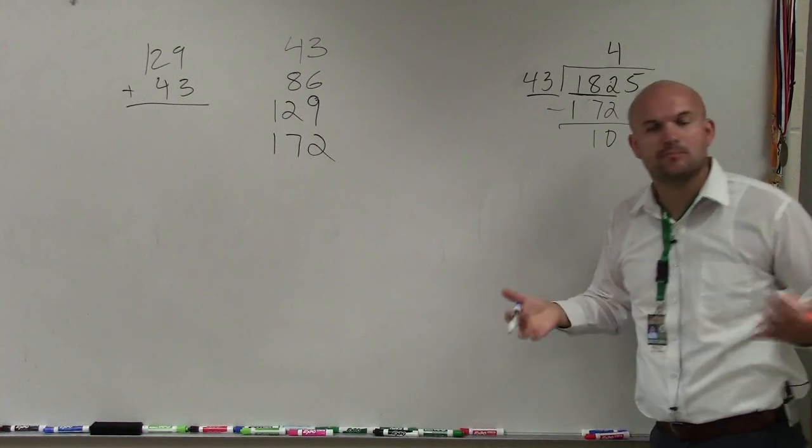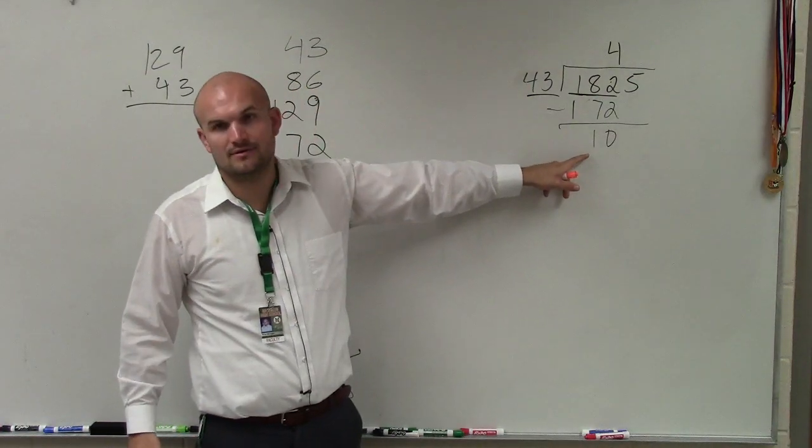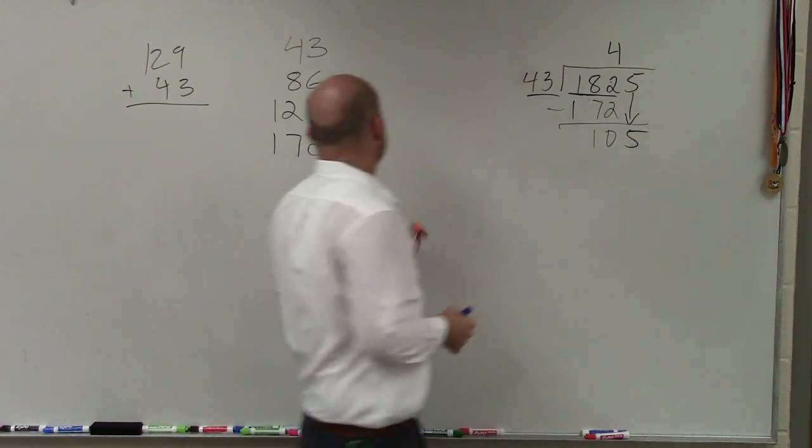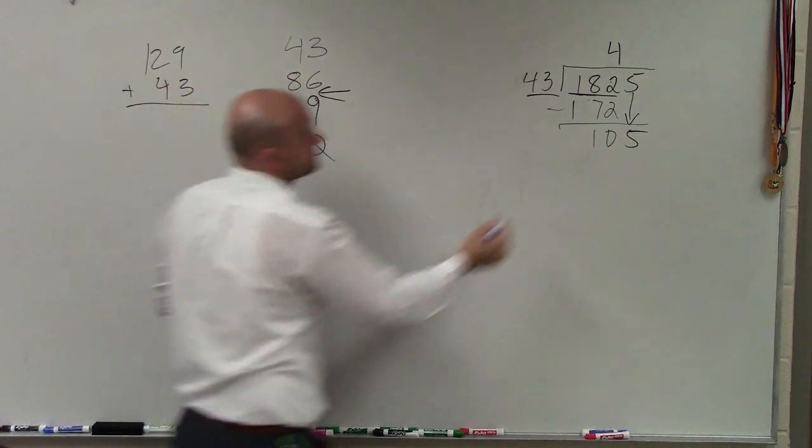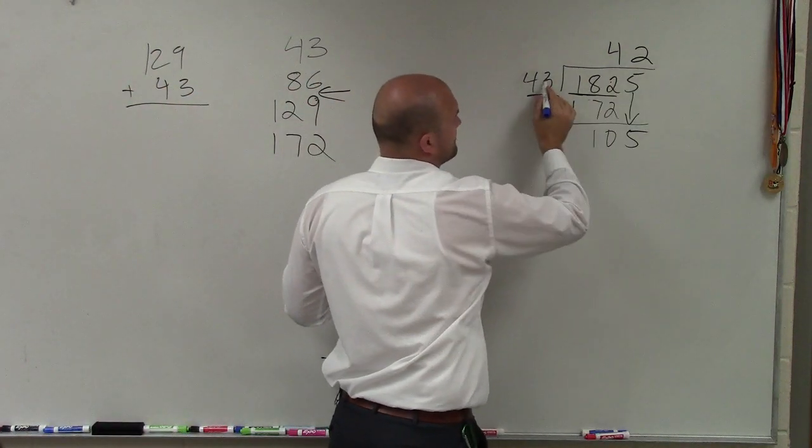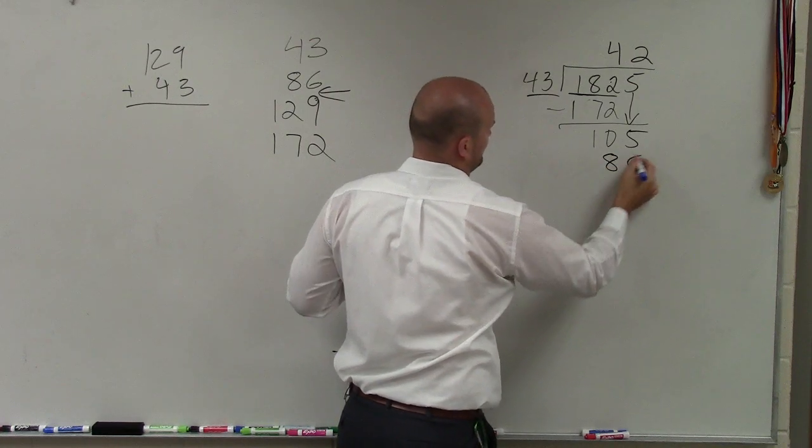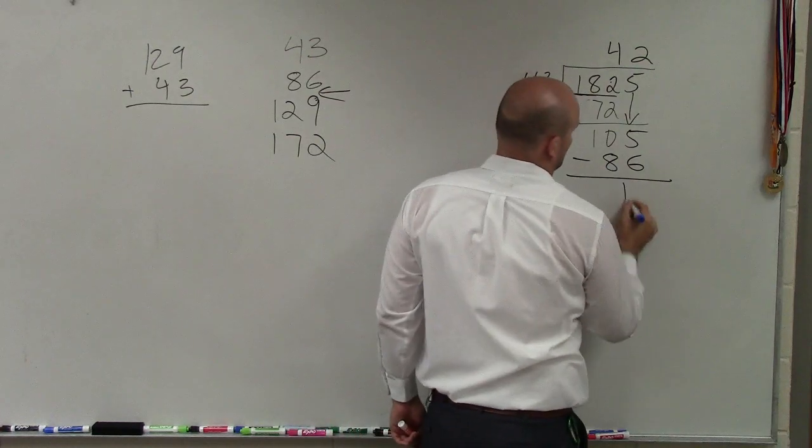Now, we do the same process all over again. Does 43 divide into 10? No. So we bring down the 5. Now, how many times is 43 going to divide into 105? 2. 2 times 43 is going to be 86. Subtract, I'm sorry, 19.